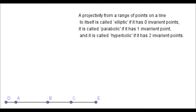Axiom 6 states that if we have a projectivity from a line to itself and that projectivity has at least three invariant points, then every point on that line is invariant under this projectivity. In other words, if a point is mapped back to itself for three or more points, then it must be true for every point, meaning our mapping is simply the identity.